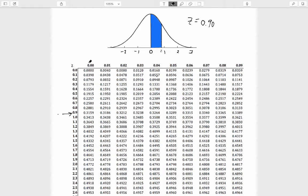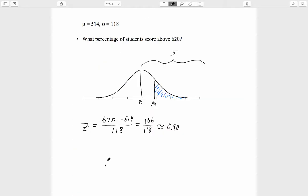When z equals 0.90, we have a value in the table of 0.3159. So our probability that we're looking for equals 0.5 minus 0.3159. That equals 0.1841, and that is our answer. Since the question really asked about a percentage of students, we should express this as 18.41% of students scored above 620.